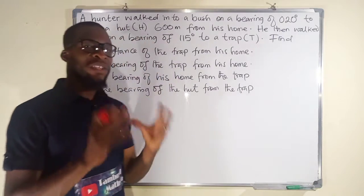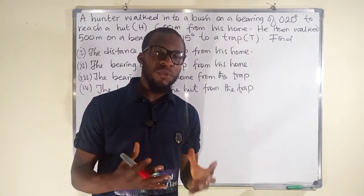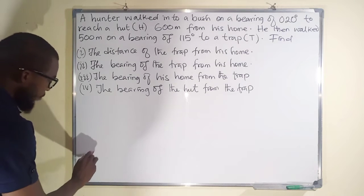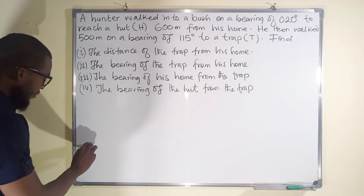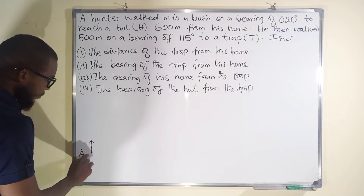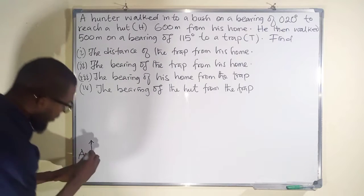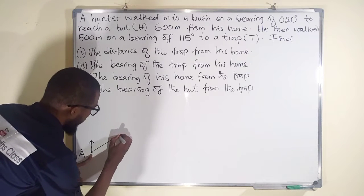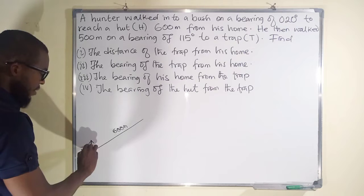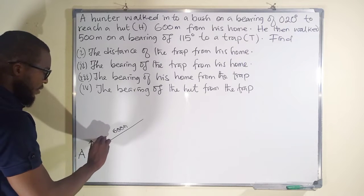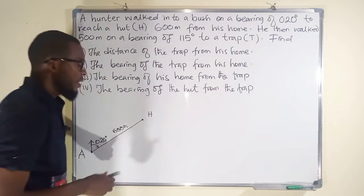The first point to plot is the first bearing, which is 20 degrees, constructed at his home. Let that home be point A, and every point has a north pole. We construct 20 degrees with a distance of 600 meters. This point is H, which is the hut — it also has a north pole.